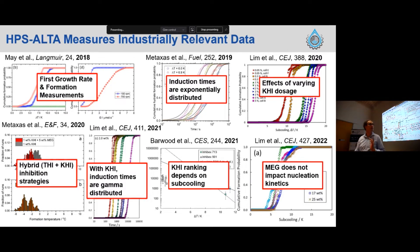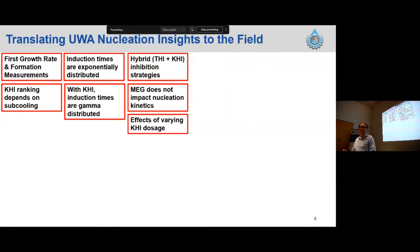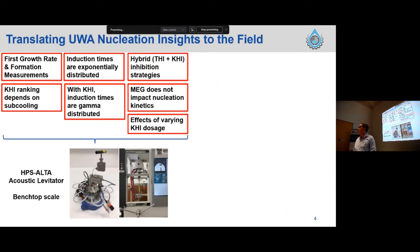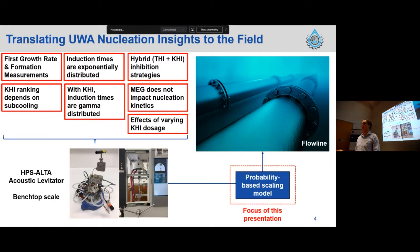So the question comes: we've got all these very relevant but disparate ideas conducted on a bench scale apparatus — how do we actually get this to a flow line? Most of these insights have come from either the HPS Ultra or from the acoustic levitator, which are on a benchtop scale, and we want to get this up to a flow line. To go from these two very different scales, we need some sort of probability-based scaling model, which is what we're going to be focusing on today.